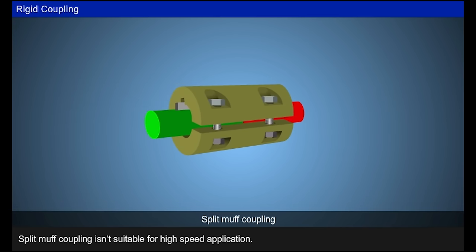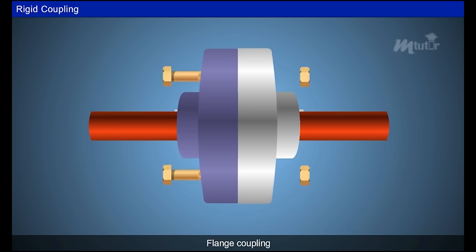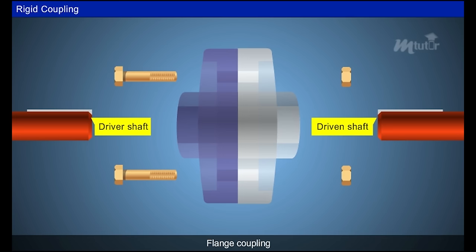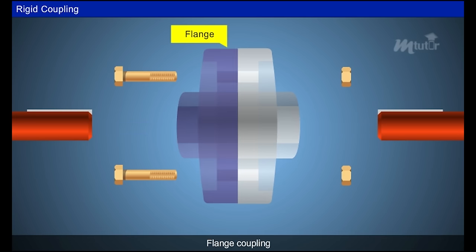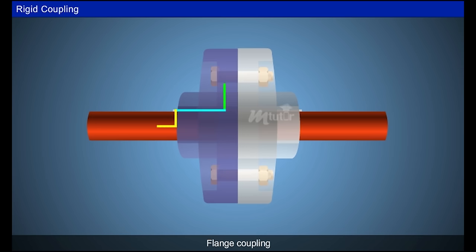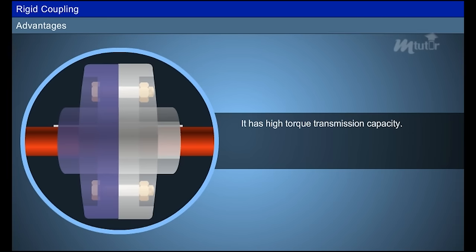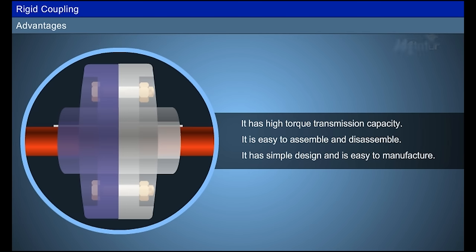So the split muff coupling is not suitable for high-speed applications. To overcome this problem, flange couplings are used. In flange coupling, the driver and driven shafts are each connected to a flange sleeve locked by a key, and the two flanges are connected by bolts and nuts. The torque from the driver shaft is transferred to the flange through the key, then to the other flange through bolts and nuts. It has high torque transmitting capacity, is easy to assemble and disassemble, and has a simple design that is easy to manufacture.